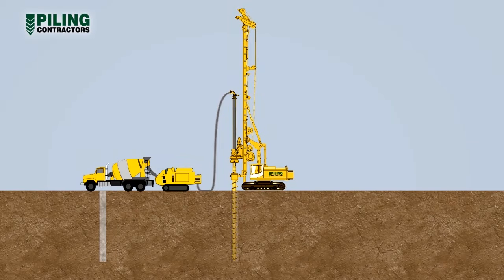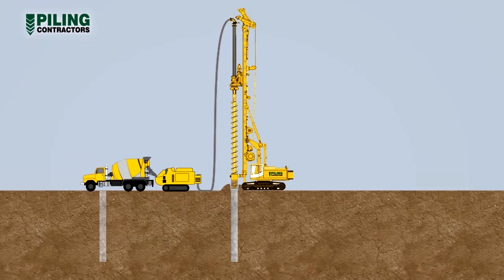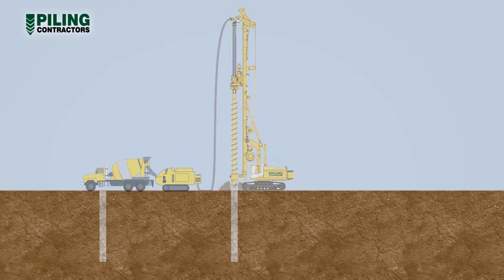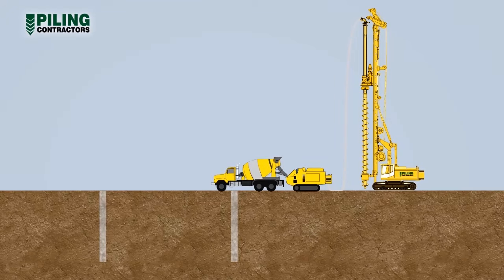Once the auger reaches the required depth, concrete pressure dislodges a temporary cap at the base of the hollow stem and concrete is pumped under pressure into the ground while the auger is withdrawn, carrying the excavated soil upwards.